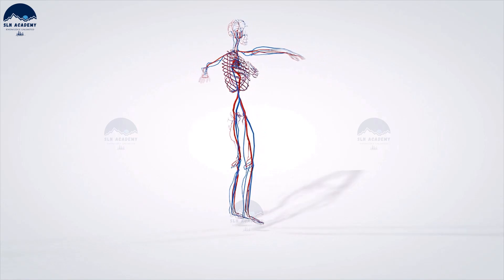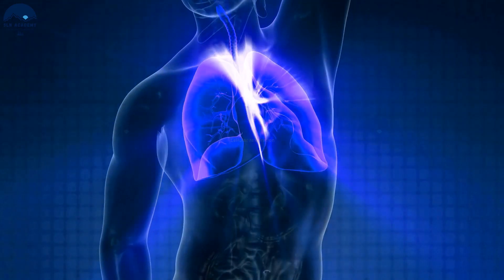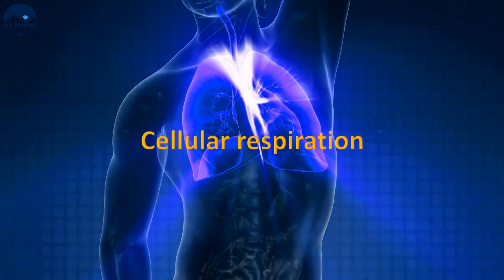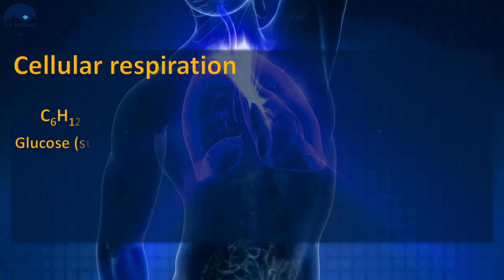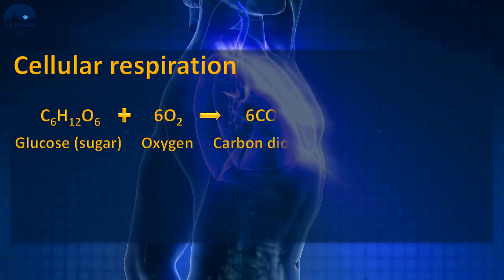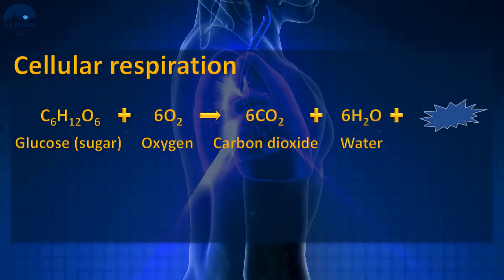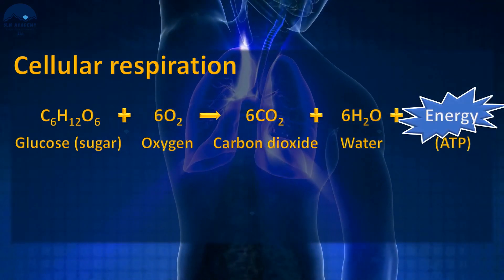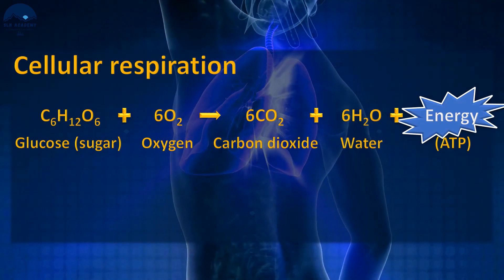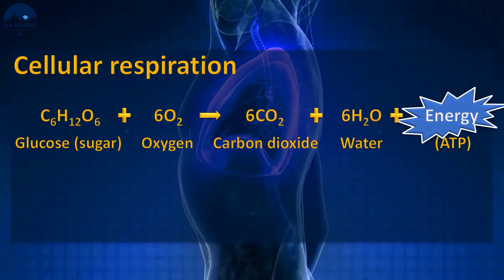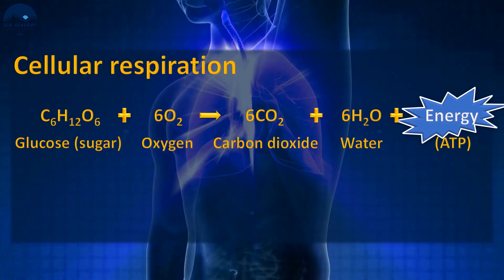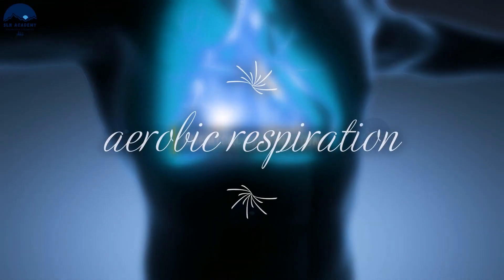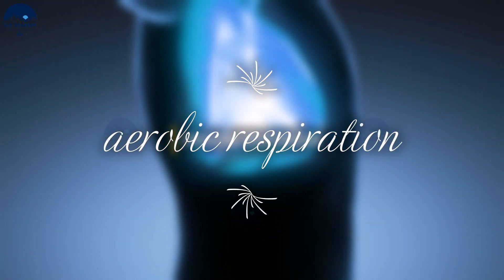The third process is cellular respiration, which breaks up sugars and produces the chemical energy that the cells in the body need. This happens in all forms of life. ATP is a chemical which the cell uses for energy. Usually, this process uses oxygen and is called aerobic respiration.